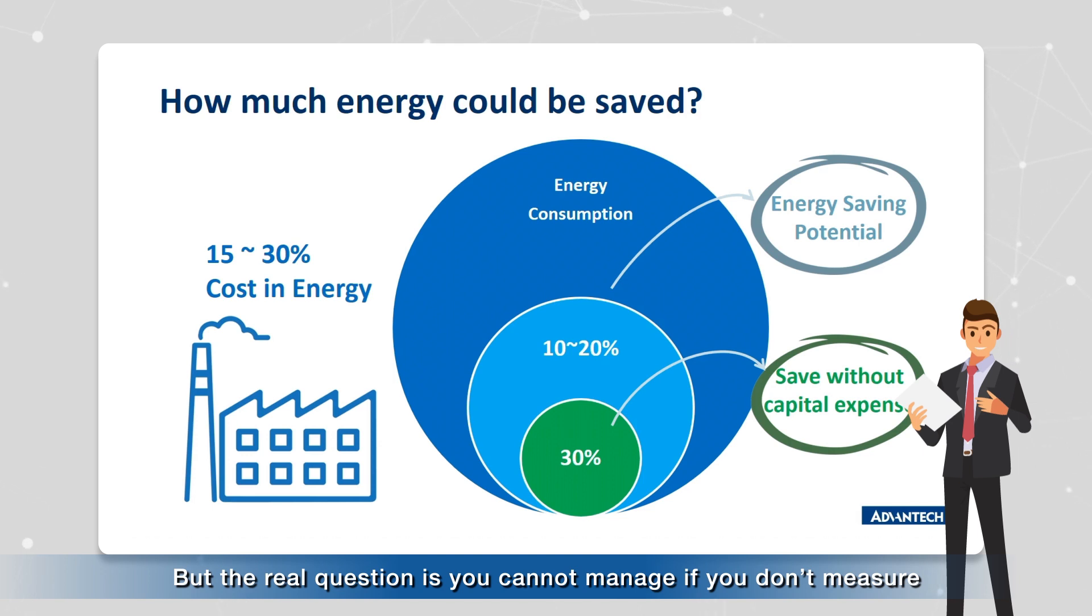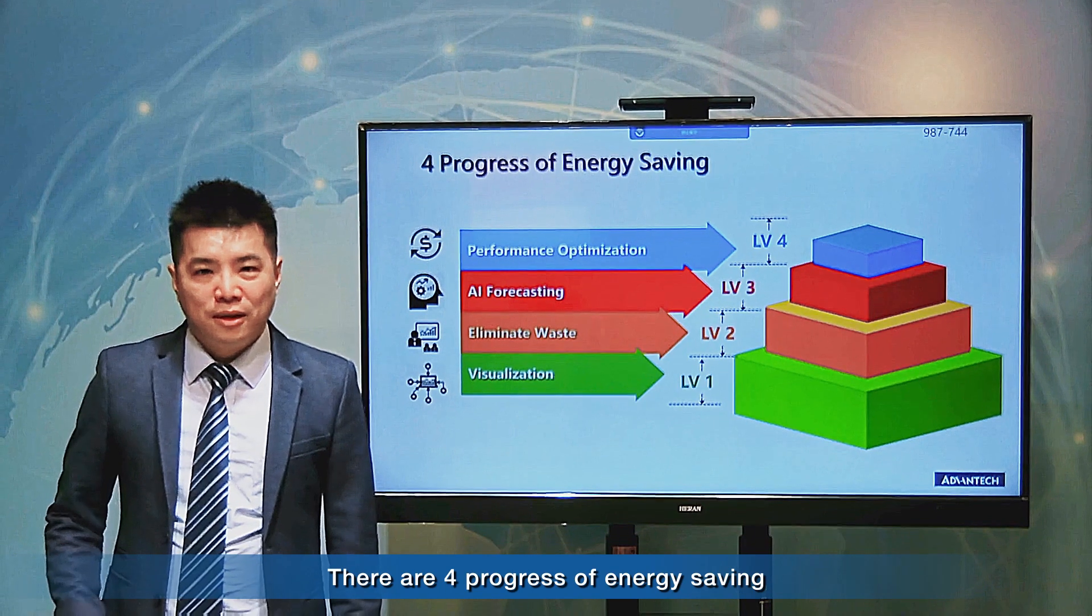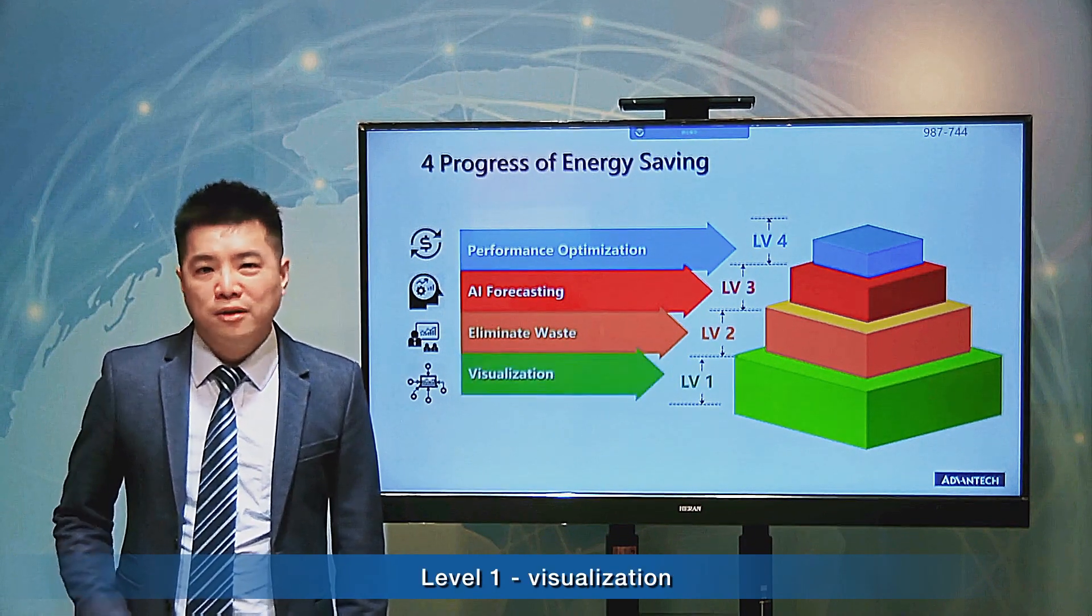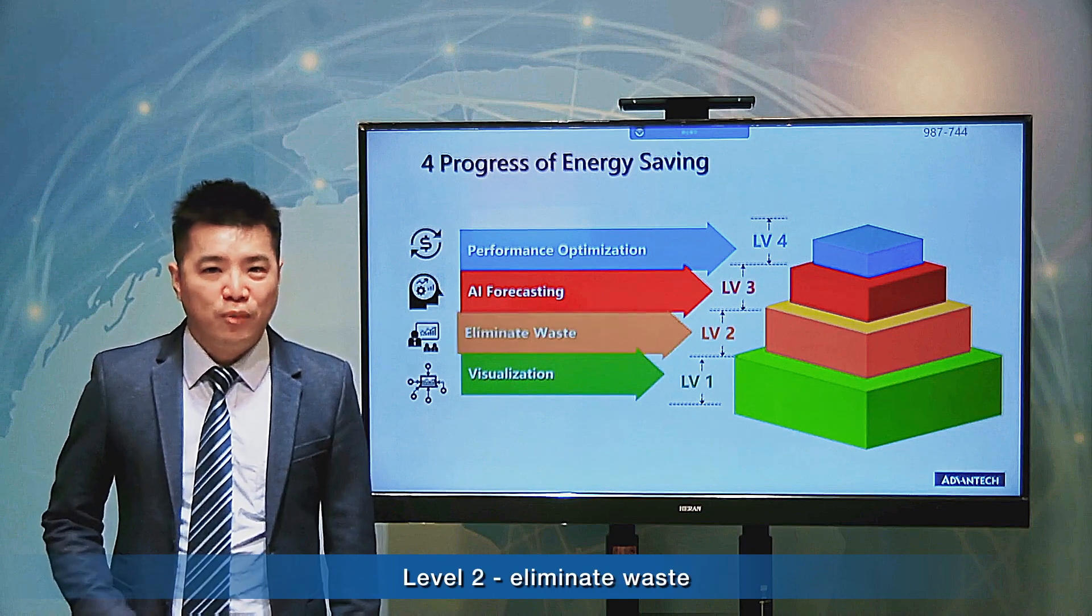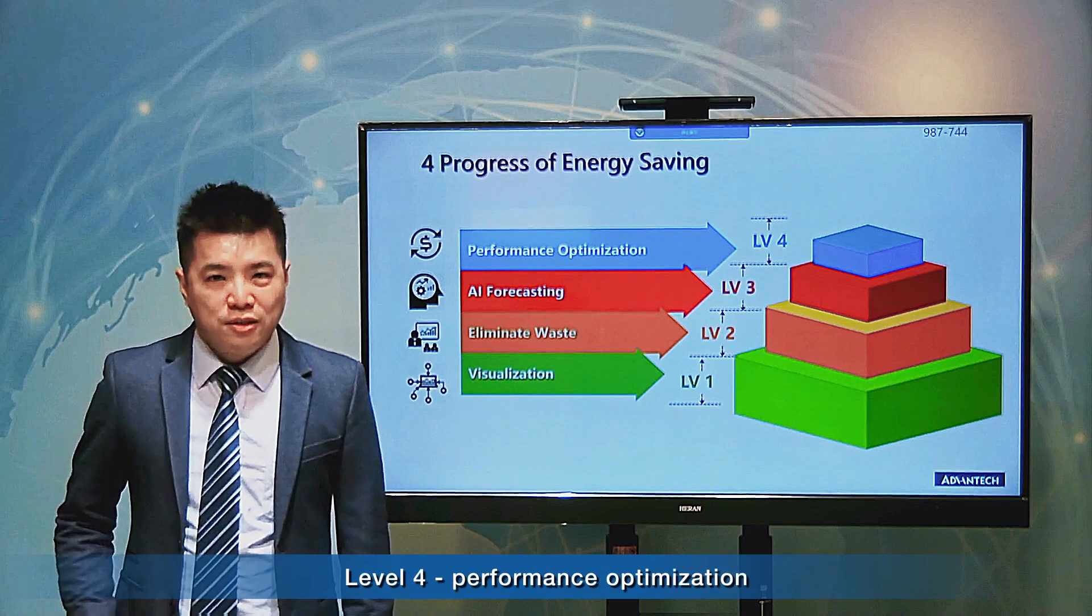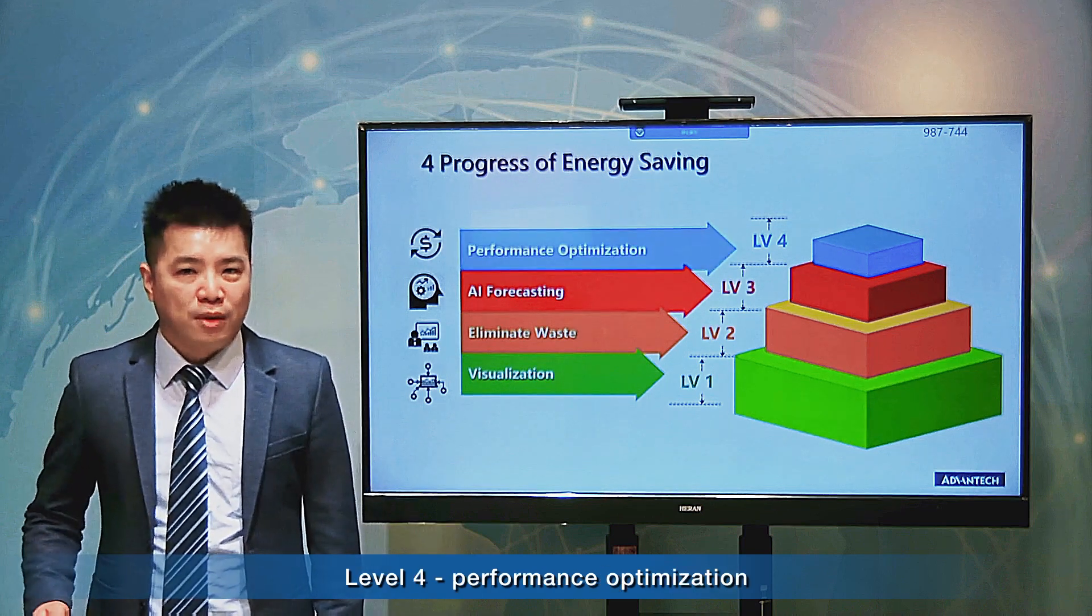But the real question is, you cannot manage if you don't measure. There are four levels of progress in energy saving. Level 1: Visualization. Level 2: Eliminate Waste. Level 3: AI Forecasting. Level 4: Performance Optimization.